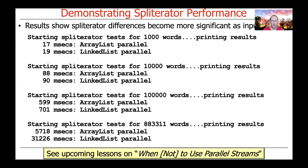The results demonstrate that the spliterator differences between ArrayList and LinkedList become more significant as input size grows. The test has four runs: with 1,000 words, performance is roughly the same — about 17 to 19 milliseconds, really indistinguishable. With 10,000 words, it's still about the same; ArrayList is infinitesimally faster at 88 milliseconds versus 90 milliseconds, but it doesn't really matter.